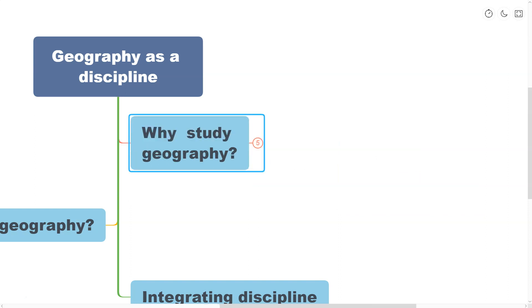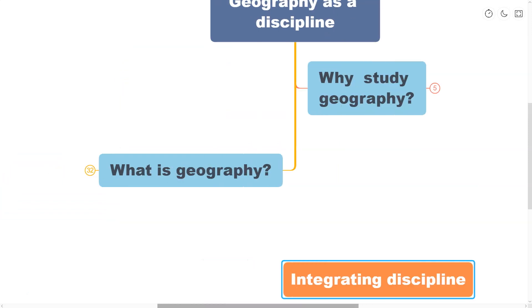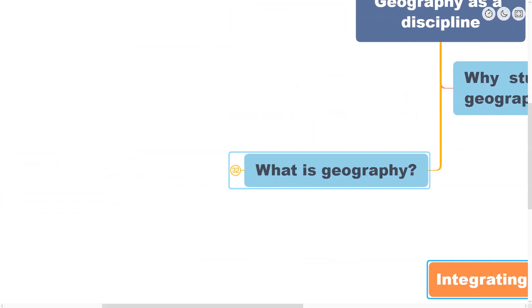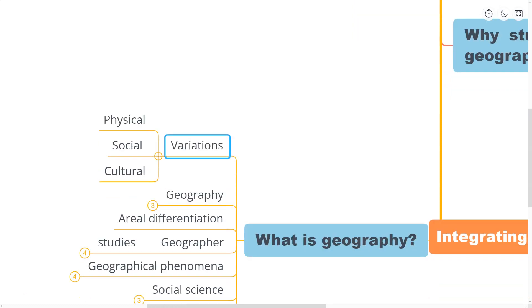Now, you might have a follow-on question, which is: what is geography? Well, you do know that the earth is our home. It is also the home of many other creatures, big and small. The earth's surface is not uniform and it has variations in physical features.